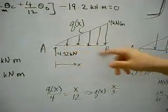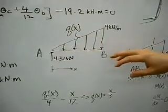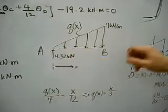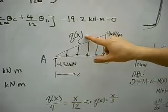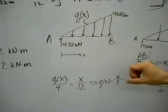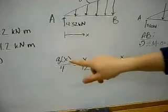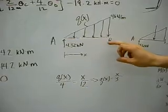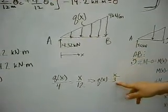Taking a look at section AB and knowing the moments at A and B that we solved for already, we summed the moments at B and got our reaction at A to be 4.32 kN. This is the distributed load, which we'll call Q of X. Q of X over 4 equals X over 12, which is our dimension, and solving for Q of X, we get X over 3.